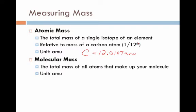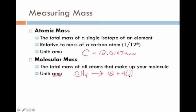We can then extrapolate further and talk about molecular mass — the total mass of all the atoms that make up your molecule. Just like atomic mass, it is also measured in atomic mass units. A great example is CH4, made up of one carbon and four hydrogen atoms. Its molecular mass is the mass of carbon, approximately 12, plus four times the mass of hydrogen, approximately 1, giving us 16 atomic mass units.